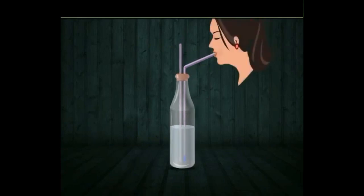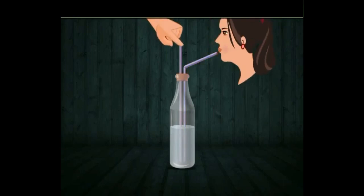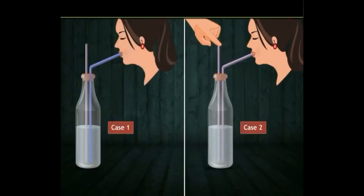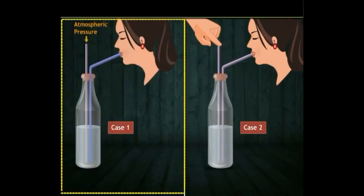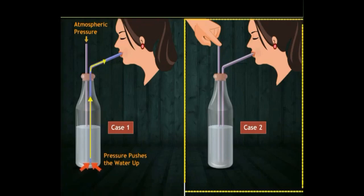We are able to suck lemonade with a straw because of atmospheric pressure. The atmosphere exerts pressure on the upper surface of the lemonade. Initially, when we suck from the straw, all the air in the straw gets inside our mouth. So there is very little or no pressure inside the straw. But on the upper surface, atmospheric pressure is being exerted. So the lemonade or water moves from the glass to inside the straw, and thus we are able to suck the lemonade.